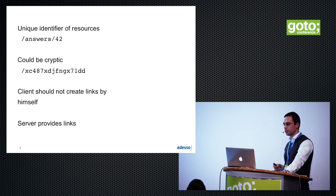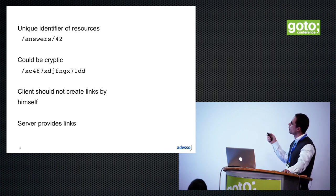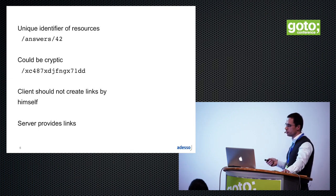Which URI is better depends on the use case. A readable URI gives us an intuitive understanding of what this resource is about. A cryptic URI has no meaning for a human reader — maybe for a machine it makes sense, but not for us. Nonetheless, the client should never create the links by himself; this is a task for the server. The server provides the links. This is a basic concept of hypermedia and REST.